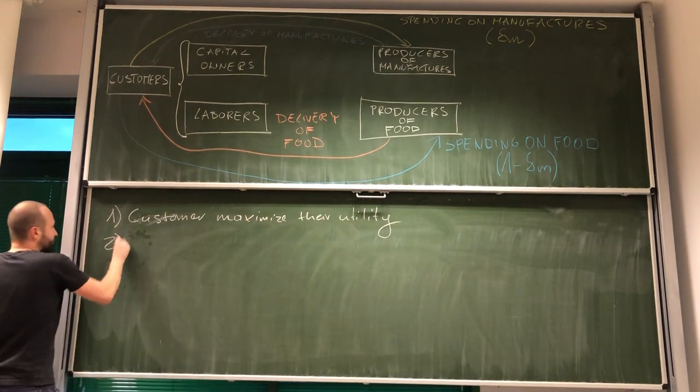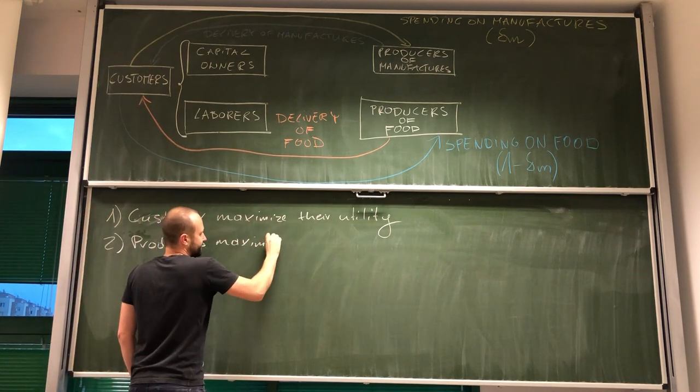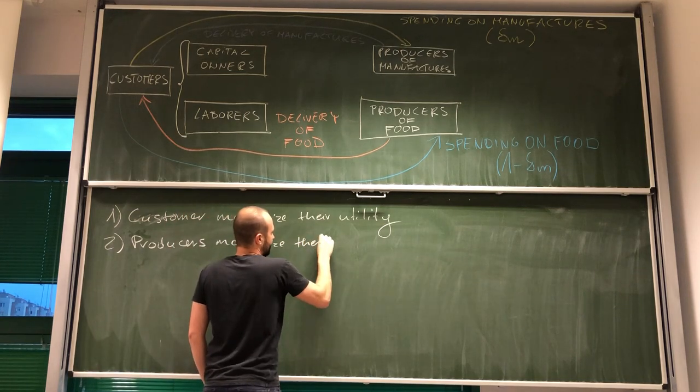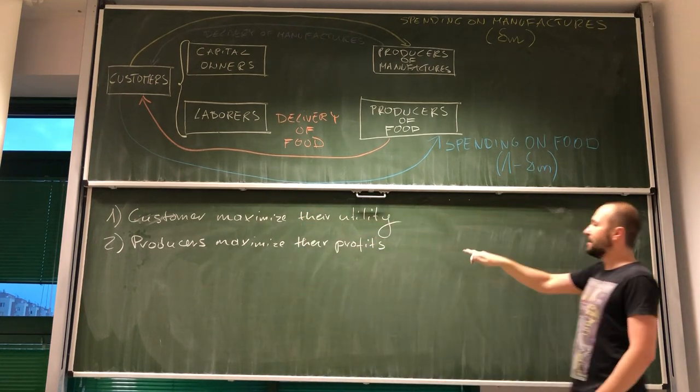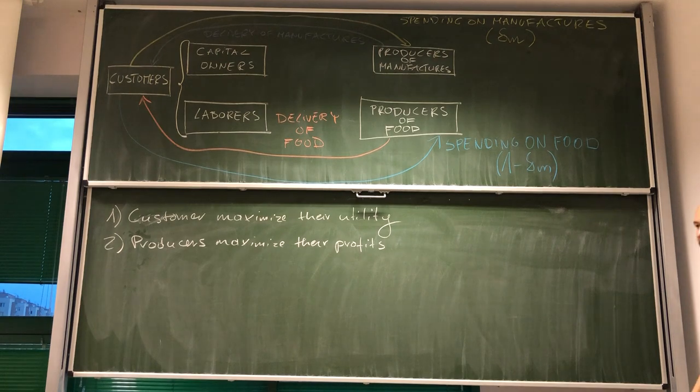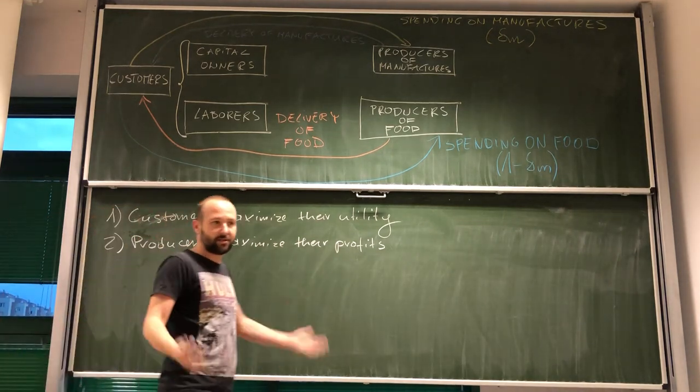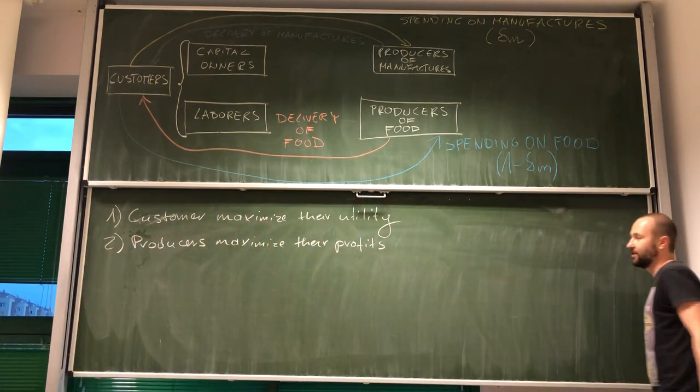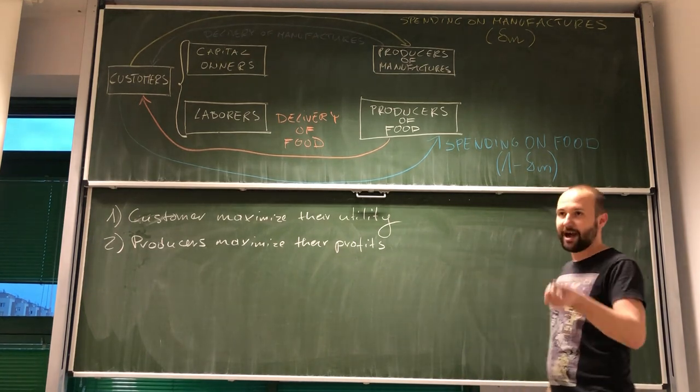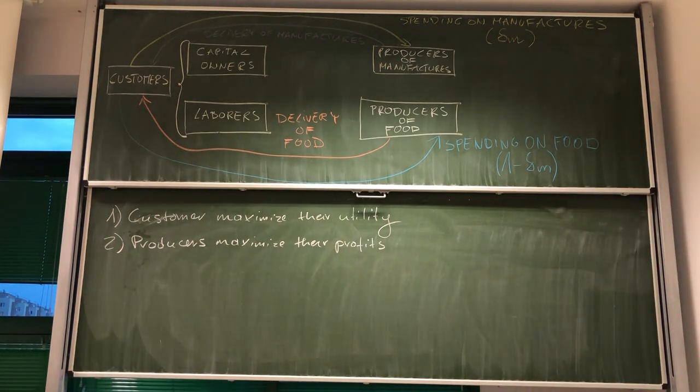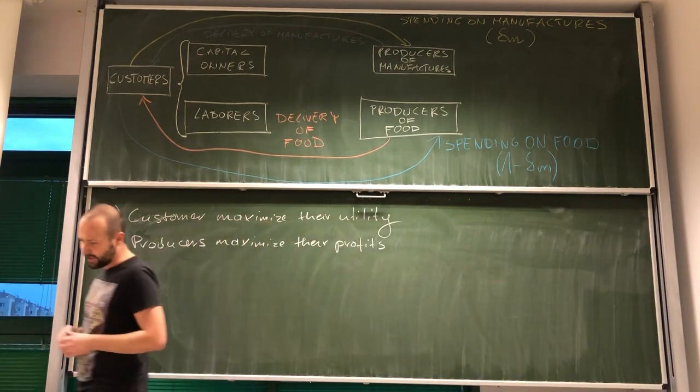So, we see that through indifference curve, we were able to put into our model customers maximizing utility. Then, the second condition is, producers maximize their profits. In a previous video, we've seen production possibility frontier. How do producers choose a point that maximize their profit? They find a point on the production possibility frontier that is tangent to the price of manufacturers to price of food ratio.